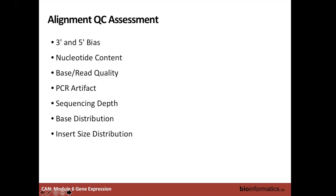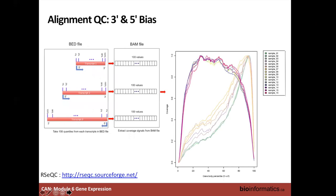We'll talk about ways to assess alignment quality, using several plots produced by tools like RSeQC. One QC check is the 3-prime/5-prime coverage bias: for every transcript, reads are binned into 100 positions and you look at coverage across those bins. Ideally reads map uniformly from the 5-prime to the 3-prime end. If you see much more read mapping on the 3-prime end, that indicates a bias — possibly two samples prepared differently with different library types. This can affect downstream analysis and clustering; if samples show different biases, you need to account for them, perhaps with batch effect correction.